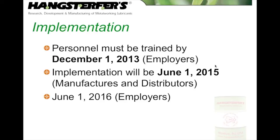The sooner deadline of June 1st, 2015 for manufacturers and distributors allows us as a manufacturer, and many of you as distributors, to turn over your inventory, get all the labeling proper in our manufacturing process, and in your inventory at your warehouse. It allows you time to get materials labeled to meet the GHS standard. And June 1st, 2016 for employers allows them time to have everything in their facility converted over to GHS labeling. We're going to talk a lot about the details of that labeling in the next few slides.